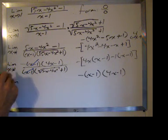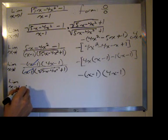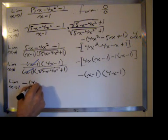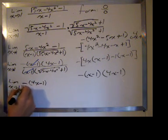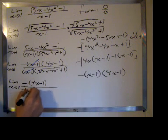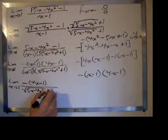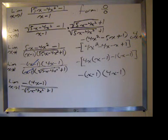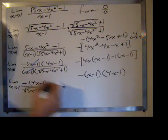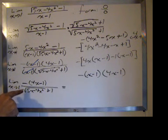I'm just going to rewrite before I take the limit. The limit as x goes to 1 of negative times 4x minus 1 divided by the square root of 5x minus 4x squared plus 1. Now as x goes to 1, the numerator goes to negative times 4 times 1 minus 1, which is negative 3.